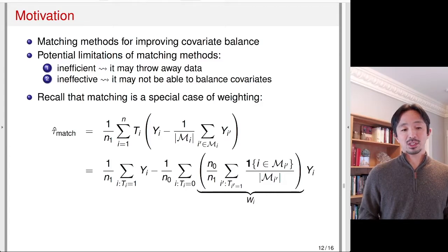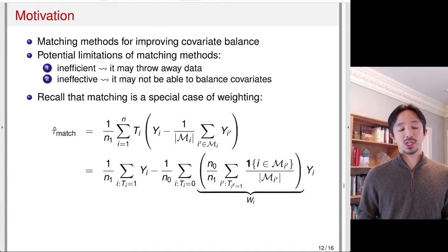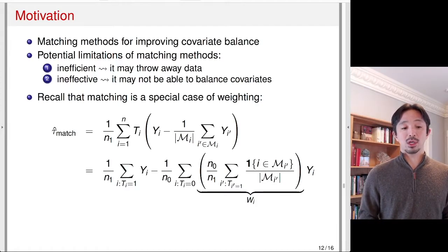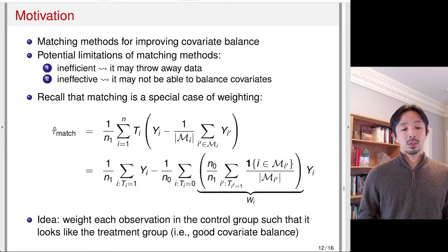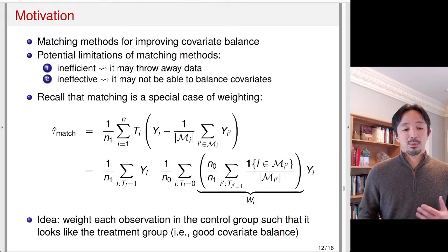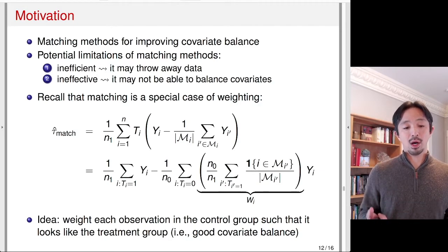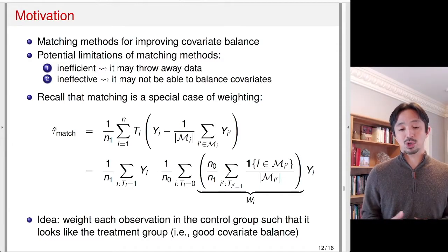Let's remember that matching is really a special case of weighting. We can already write any matching estimator as a weighting estimator. For every control unit, it is going to receive some weight, which is proportional to the number of times it gets matched to treated units. Essentially, the idea of the matching estimator is that of the weighting estimator, where we weight each observation in the control group differently. Because the treatment and control groups are very different, we adjust the control group by weighting some observations more than others, so that the control group looks like the treatment group and achieves good covariate balance.